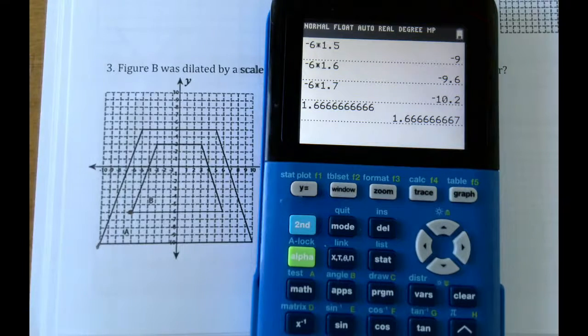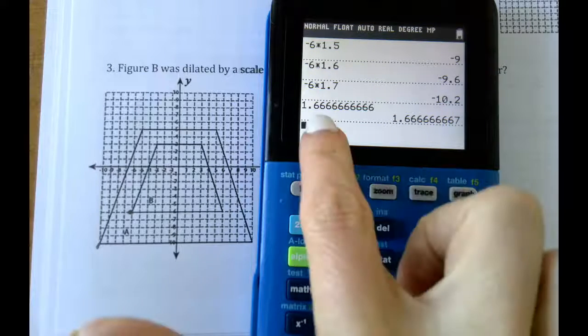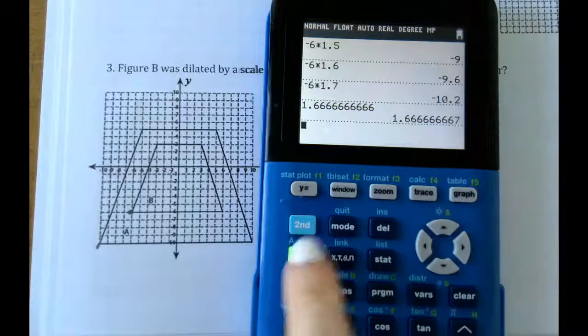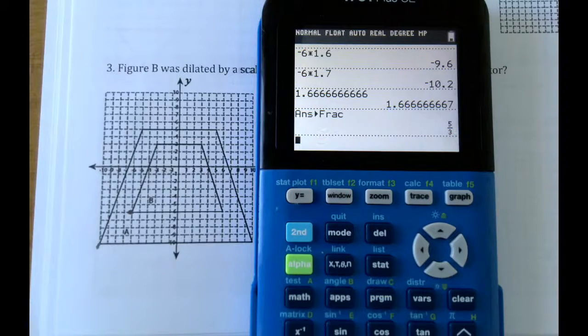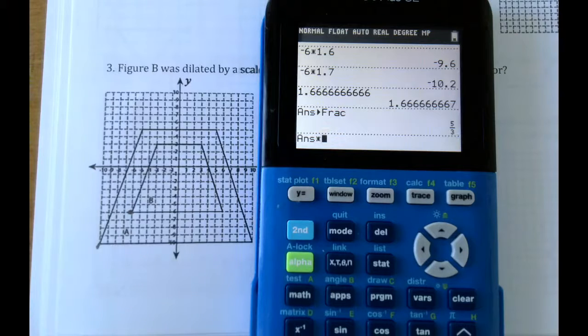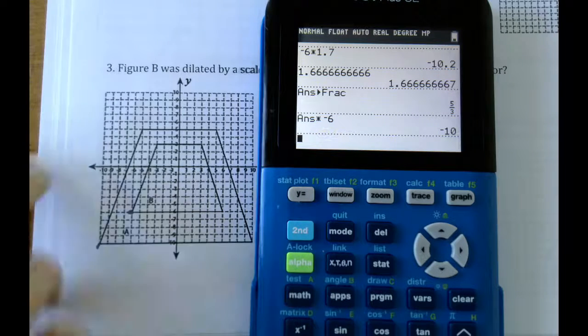That one is a tricky fraction. It's a really tricky fraction. But if you kind of go like this in your calculator, press enter, it'll give you that. Math, enter, enter. The fraction is 5 thirds. So we need to multiply 5 thirds times negative 6. There it is. It's negative 10.